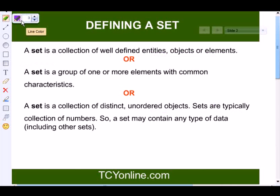In other words, we can define the set as the collection of well-defined entities, objects, or elements. Or a set is a group of one or more elements with common characteristics. Or a set is a collection of distinct, unordered objects. Sets are typically basically the collection of numbers. A set may contain any type of data including other sets.